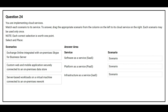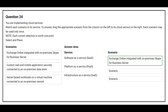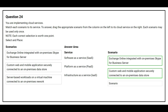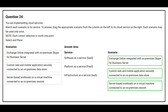The first service is Software as a Service. The correct scenario is Exchange Online integrated with on-premises Skype for Business Server. The second service is Platform as a Service. The correct scenario is a custom web and mobile application securely connected to an on-premises data store. The third service is Infrastructure as a Service. The correct scenario is a server-based workload on a virtual machine connected to an on-premises network.